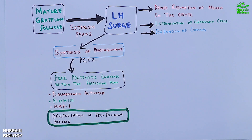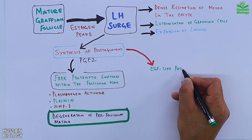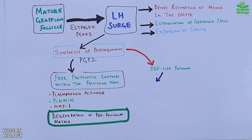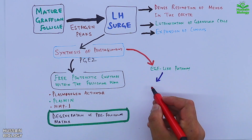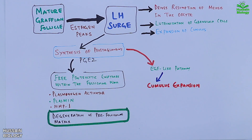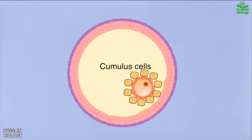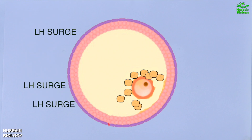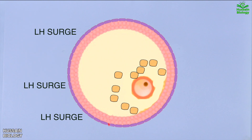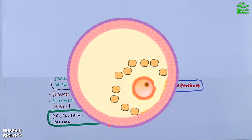On the other hand, PGE2 drives EGF-like pathways, which induce cumulus expansion. In this diagram we have the cells surrounding the oocyte — these are called granulosa cells and are also termed cumulus cells. When we have the LH surge, these cells disperse and we see the expansion of the cumulus, as shown in the animation.